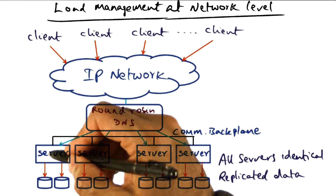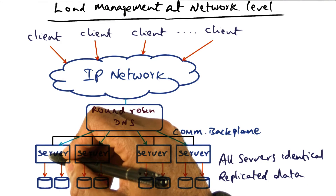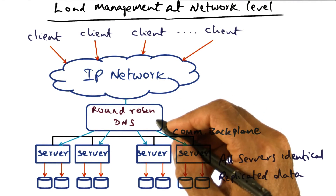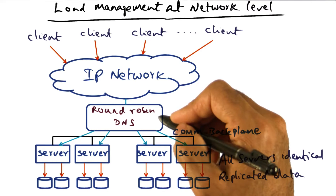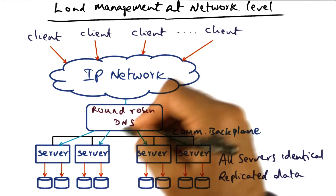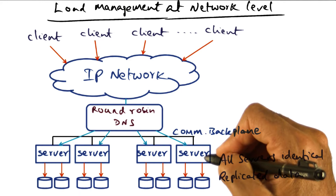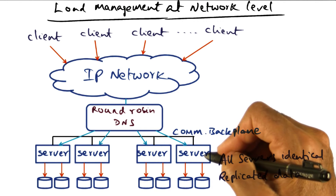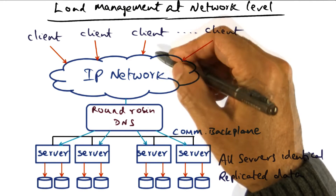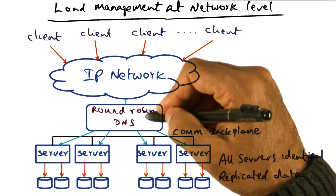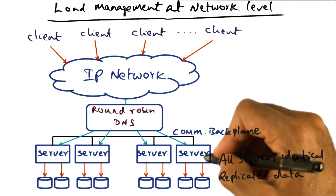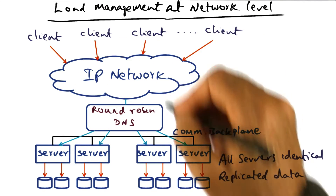If a client request goes to any server, it has access to all the data needed to satisfy that request. The pro is good load balance, because the round robin DNS scheduler can choose the least loaded server to redirect an incoming client. But the con is it cannot hide down server nodes. Because it is assigning IP addresses of servers to incoming requests, the load manager is not able to hide down server nodes from the external world.